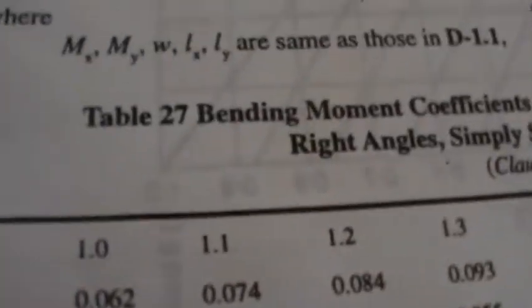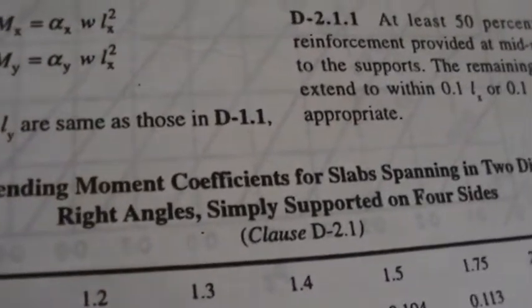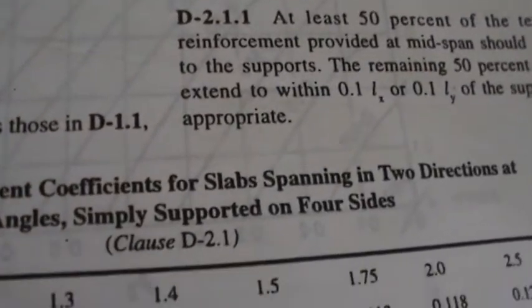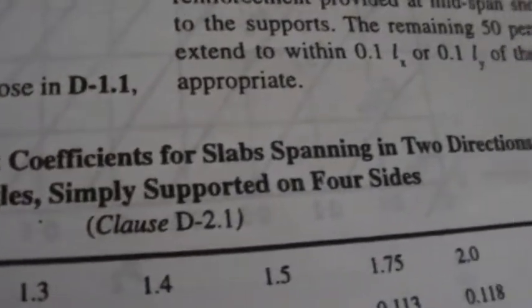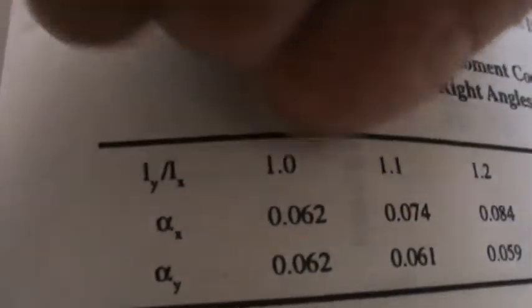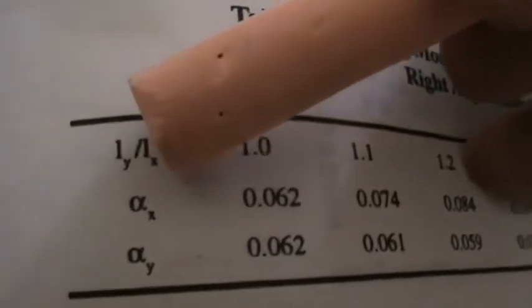See now, table number 27 is now here. I will read now: Bending moment coefficients for slabs spanning in two directions at right angles simply supported on four edges. See now, here, what he says is, here one is given LY by LX.